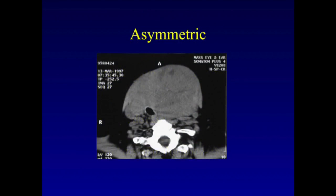This is a patient who had a very asymmetric goiter, left greater than right. This was helpful to recognize based on preoperative CT scanning because this actually rotated the larynx to the right, so that the recurrent laryngeal nerve entered in the midline because of the asymmetric goiter's rotation on the larynx.